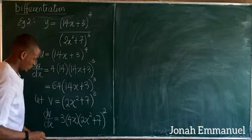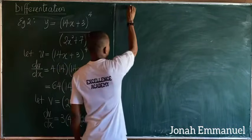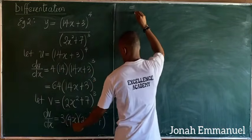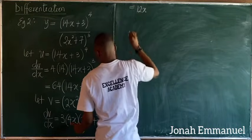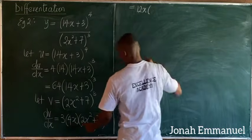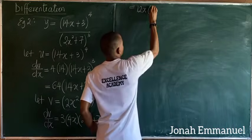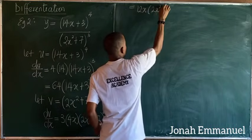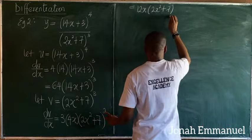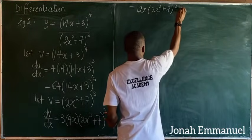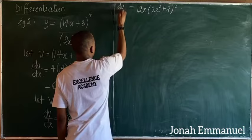Working through this, 3 times 4x gives 12x. So dv/dx equals 12x times (2x² + 7) all to the power 2. This is the value for dv/dx.